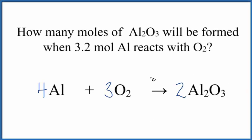We'll use the balanced equation here. Al plus O₂ gives us Al₂O₃, and the idea of a mole ratio to solve this problem. I already balanced the equation. If you need help, there's a link at the end of the video.